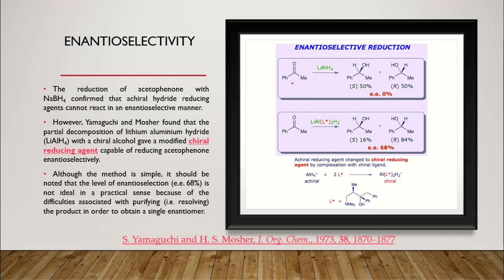The reduction of acetophenone with sodium borohydride confirmed that an achiral hydride reducing agent cannot react in an enantioselective manner. This was published by Yamaguchi and H.S. Mosher in the Journal of Organic Chemistry in 1973. Yamaguchi and Mosher found that partial decomposition of lithium aluminum hydride with a chiral alcohol gave a modified chiral reducing agent capable of reducing acetophenone enantioselectively.